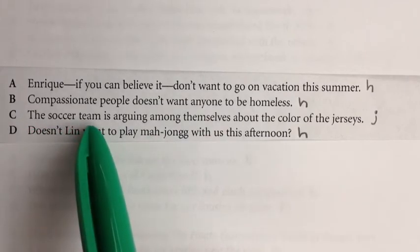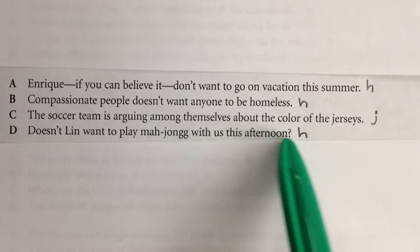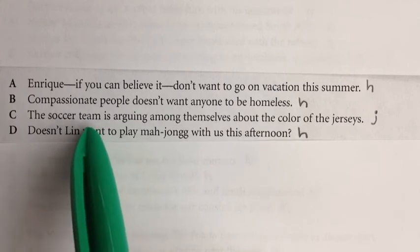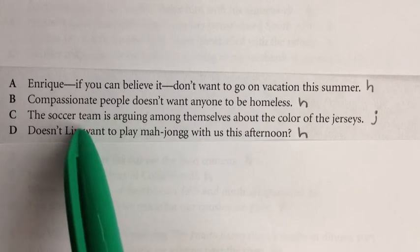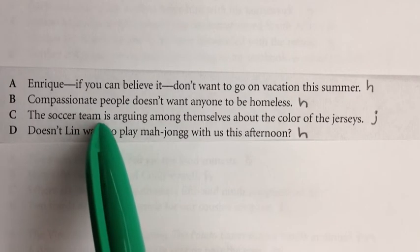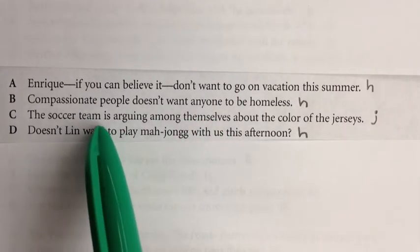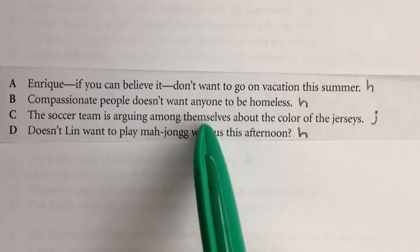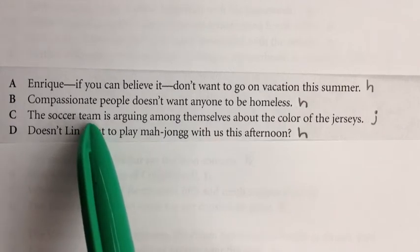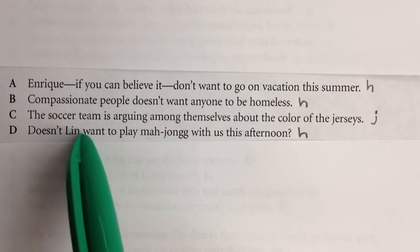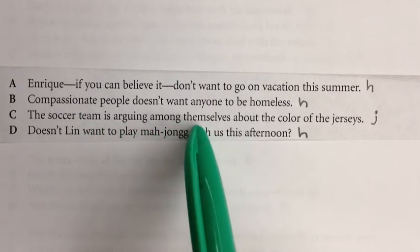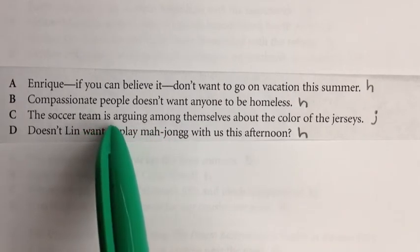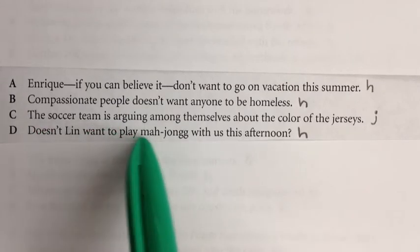Sentence C: 'The soccer team is arguing among themselves about the color of the jerseys.' The soccer team might seem singular, but if you keep reading, you see a bunch of individuals arguing with each other — not acting like a team with one purpose. This is a collective noun acting as plural individuals. So we want a verb that does not end in S. This should be 'the soccer team are arguing among themselves.'